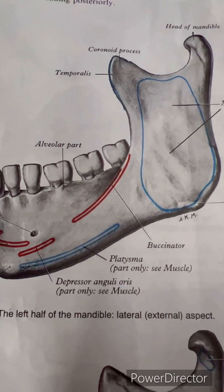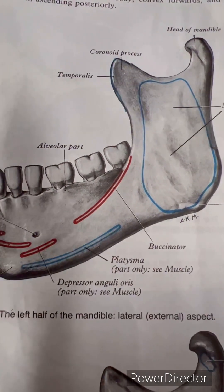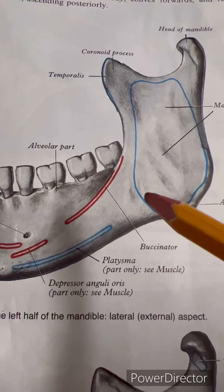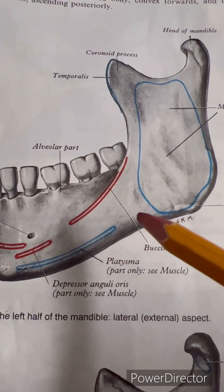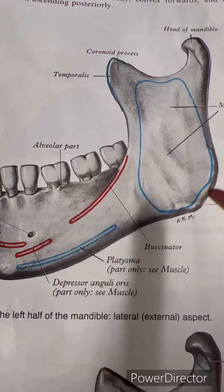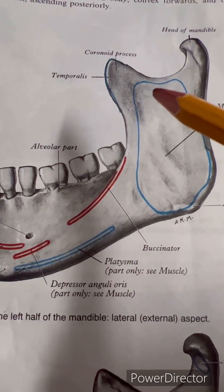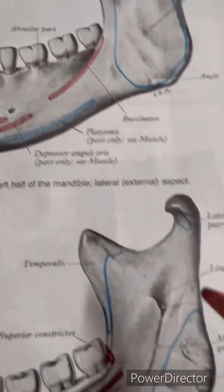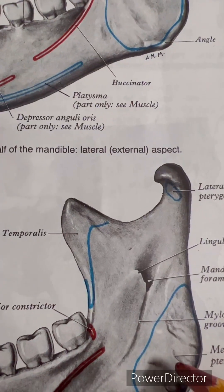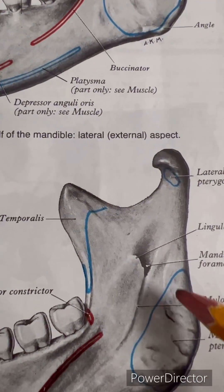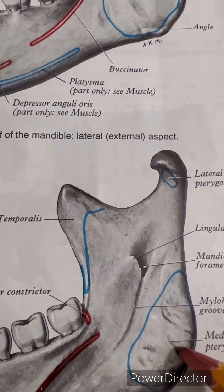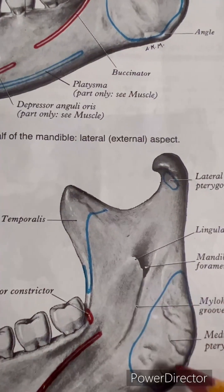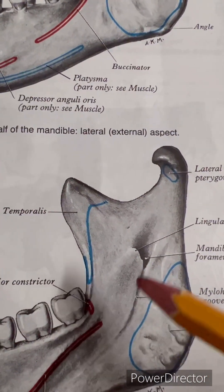Coming to the attachment of muscles of the ramus, coronoid, and condylar process: much of the lateral surface of the ramus gives attachment to masseter, except posterosuperiorly where it is covered by the parotid gland. The medial surface of the ramus gives attachment to the medial pterygoid muscle, to the roughened area posterior inferior to the mylohyoid groove.